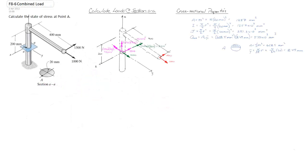I've zoomed back out and we can see all of the components of load at cross-section AA that we're considering. I've gone ahead and calculated all the cross-sectional properties for that cross-section, and you can see them added to the sheet on the right. That concludes part one of this question — figuring out what the components of load are on the cross-section of interest. We're going to take a break here, and then come back to calculate what the stresses are at point A caused by these components of load.